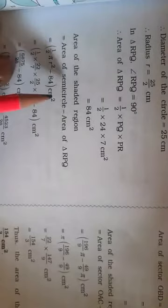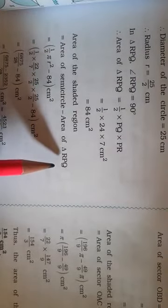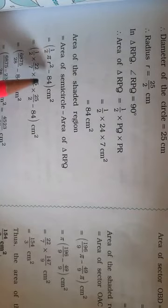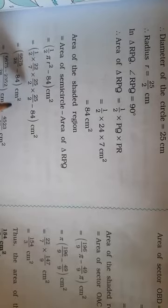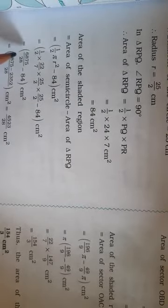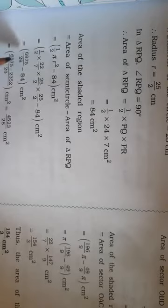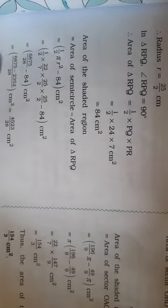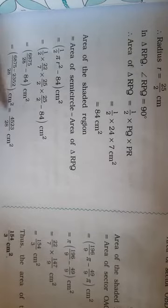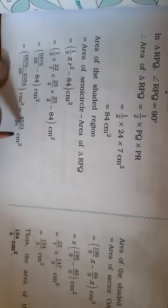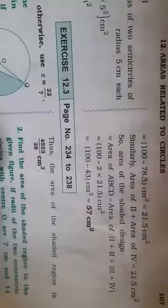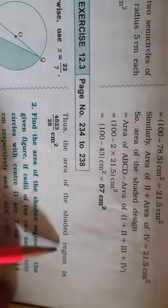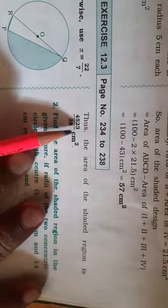Area of the shaded region = area of the semicircle minus area of triangle RPQ. So: (1/2)πr² − 84 = (1/2) × (22/7) × (25/2)² − 84 = 6875/28 − 84 = 4523/28 cm². Thus the area of the shaded region is 4523/28 cm².